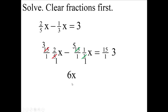So this is 3 times 2x is 6x, minus 5 times x. Everything else is gone, and you have 15 times 3 is 45. So 6x minus 5x is x equals 45.